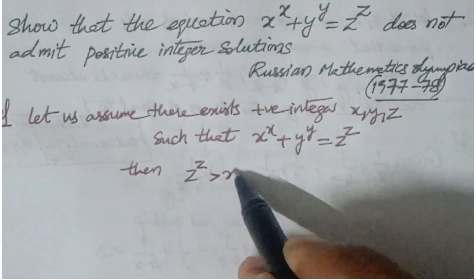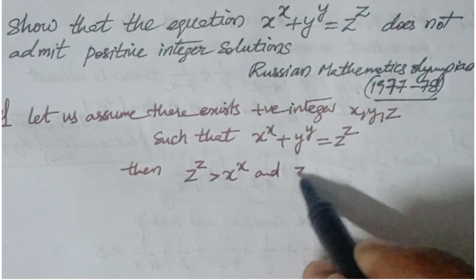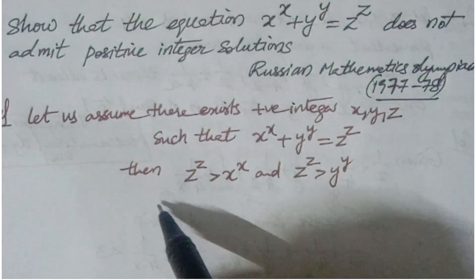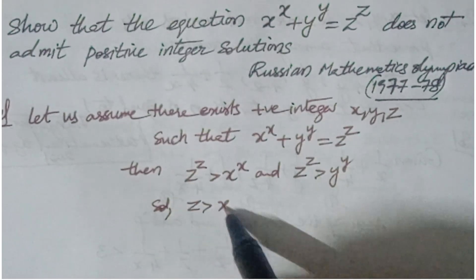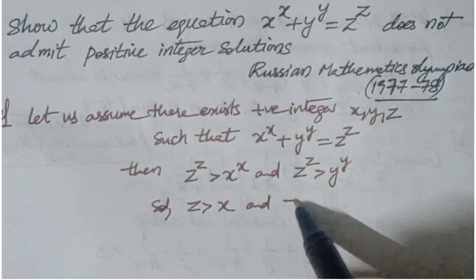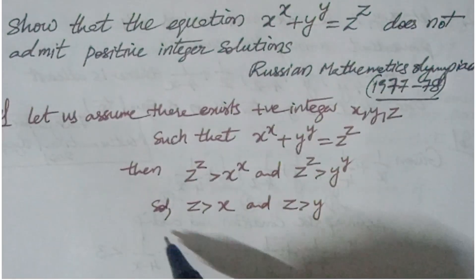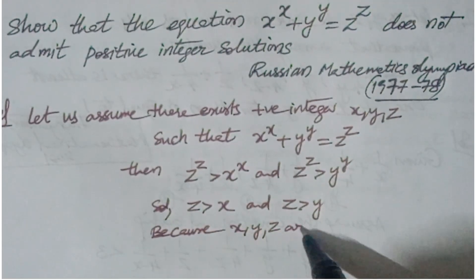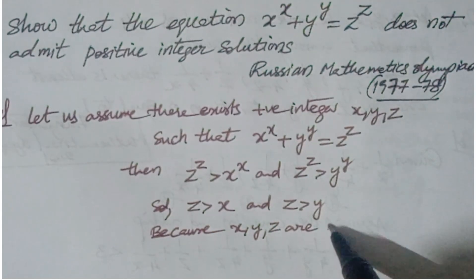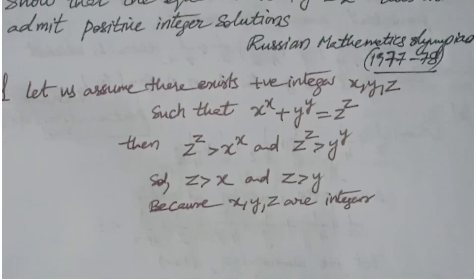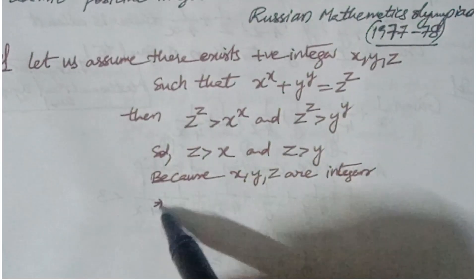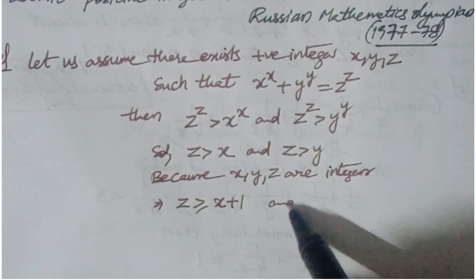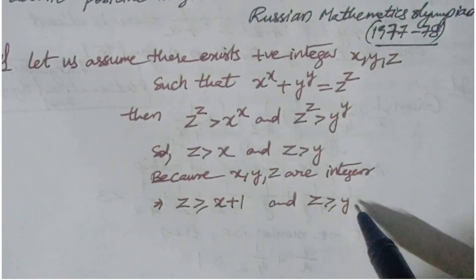By observation, you can say that z^z is greater than x^x, and z^z is also greater than y^y individually. From this you can say that z is greater than x and z is greater than y, because x, y, z are positive integers.